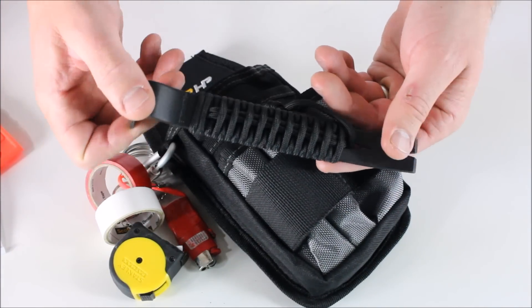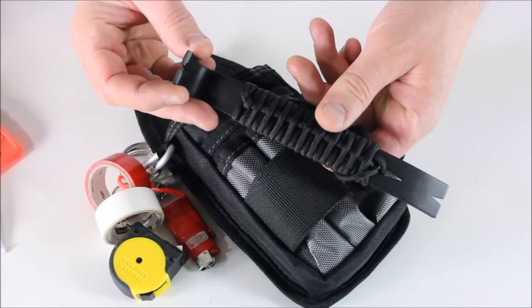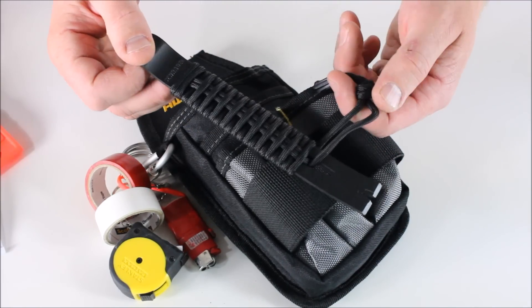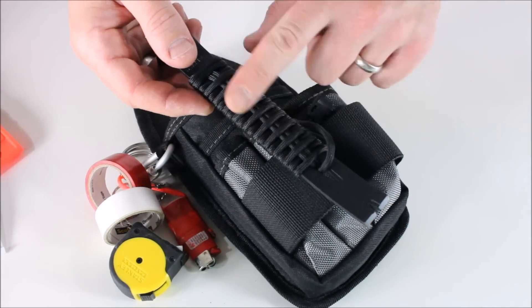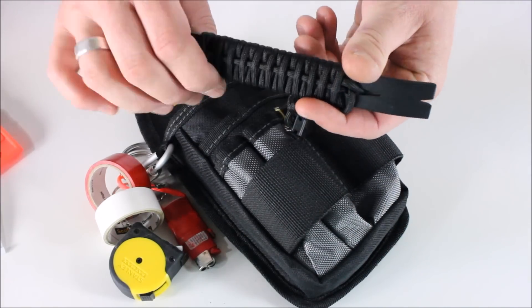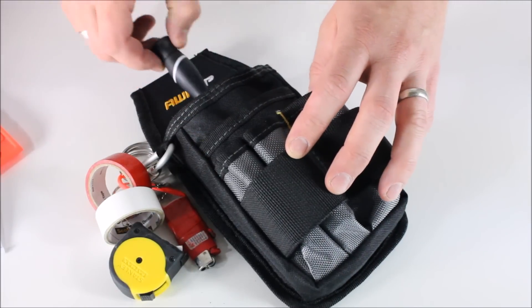Tiny little pry bar. This is from Schrade. I have a video of me just beating up on one of their other ones in OD, but this is the all black version. Little paracord included on it in case you needed it, but pry bar, nail pull, a bunch of different things you can certainly do with that.